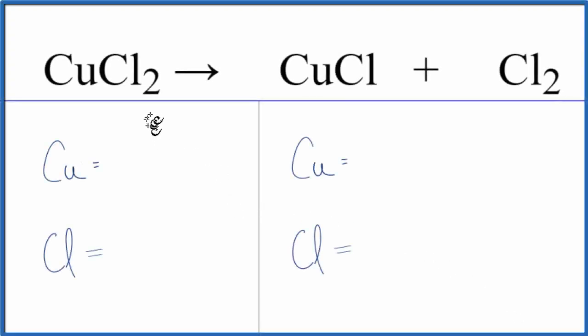In this video, we'll balance the equation for the decomposition of CuCl2. This reaction takes place at about a thousand degrees Celsius, so it's really hot. When you do that, you break down this copper chloride into copper chloride and chlorine gas.